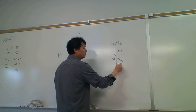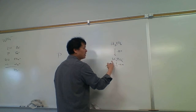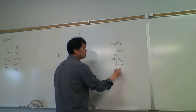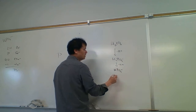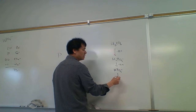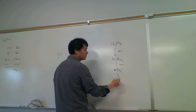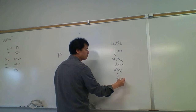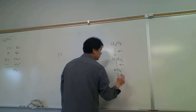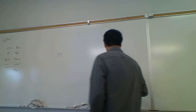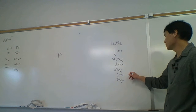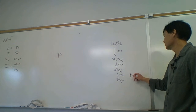If dihydrogen phosphate loses a hydrogen, we form monohydrogen phosphate. If monohydrogen phosphate loses, we form phosphate. Phosphate can only gain, so phosphate is a base.